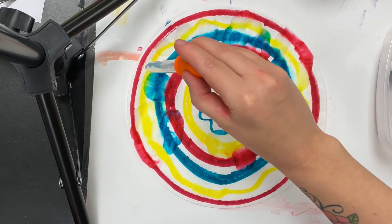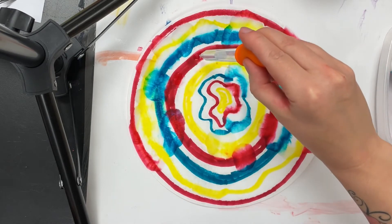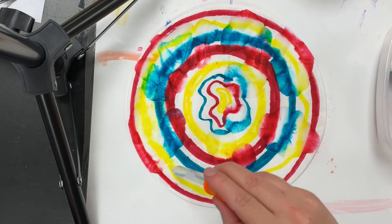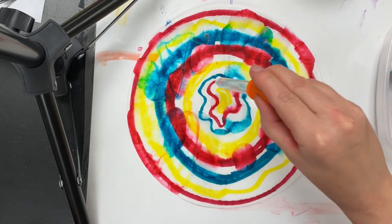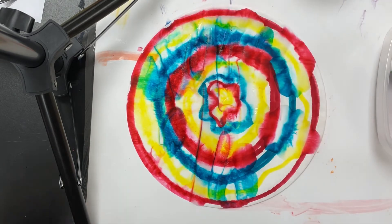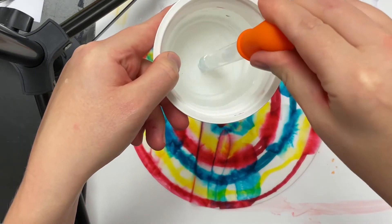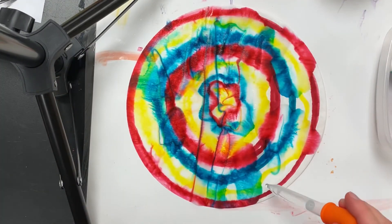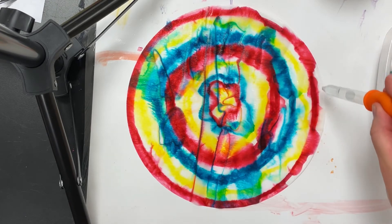This is called color diffusion paper, and as you can see, when it gets wet the colors start blending really well. They start flowing into each other.